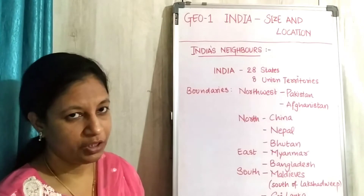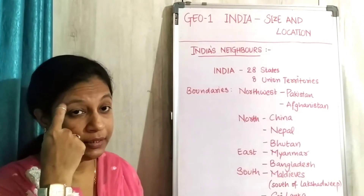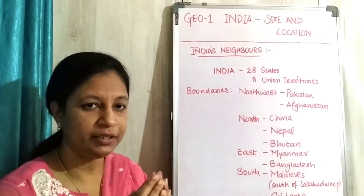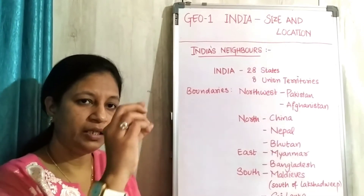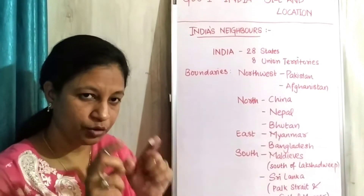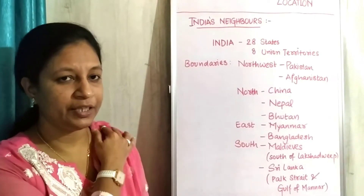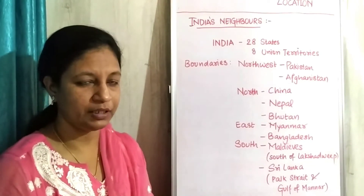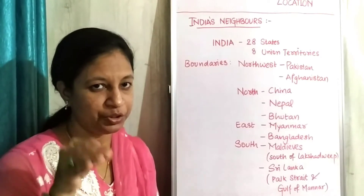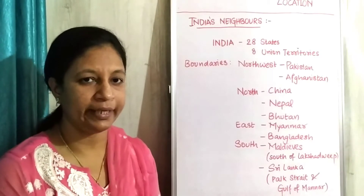We shall be looking into the neighbours of India. As we know, it is in the Asian part — India is in the central part. Half of India is attached to the mainland and the rest is surrounded by water. We shall be talking about who our neighbours are — those attached to the mainland and those in the southern part who are not attached but are still our neighbours.